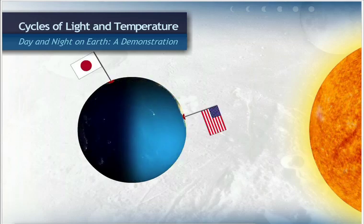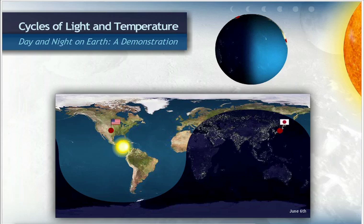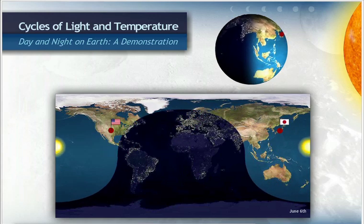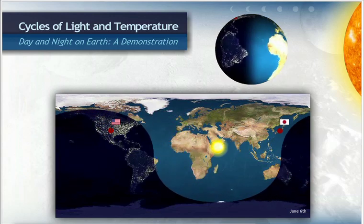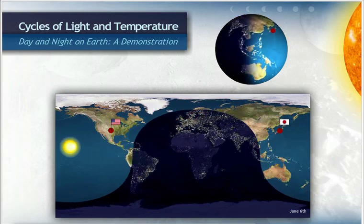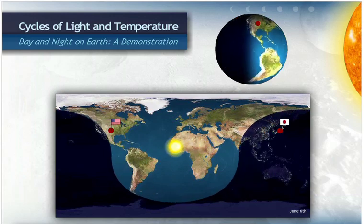The United States and Japan are both marked in red on our model of the earth. Now, watch what happens as the earth rotates. When it is day in the United States, it is night in Japan. That is because the United States is on the side of the earth directly facing the sun and Japan is not. But as the earth rotates, the United States moves away from the sun and other parts of the globe are lighted by it. In roughly half a day, the earth has rotated far enough that Japan experiences day and the United States has night.